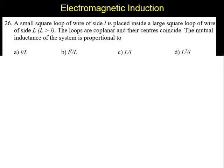Question number 26. A small square loop of wire of side l is placed inside a large square loop of wire of side L, where L is greater than l. The loops are coplanar and their centers coincide.